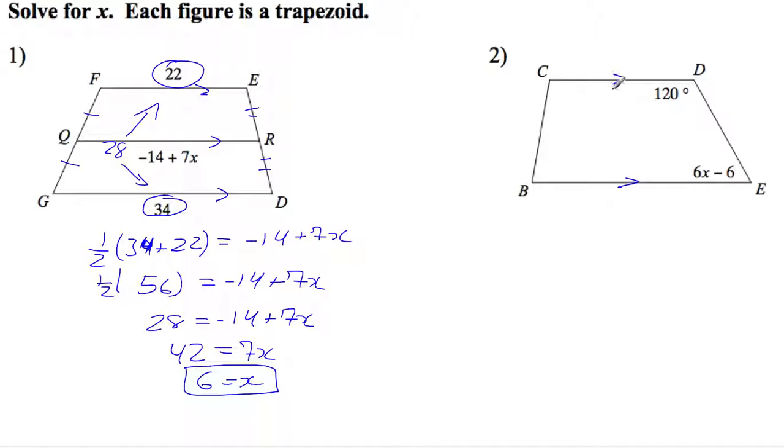And we call these parallel sides the bases. So those are the parallel lines. And again, just like when we have any type of parallel lines, we're going to have consecutive angles here cut by this transversal. These consecutive angles are supplementary. So that means that 120 plus that angle E, which is 6x minus 6, is going to equal 180 degrees.